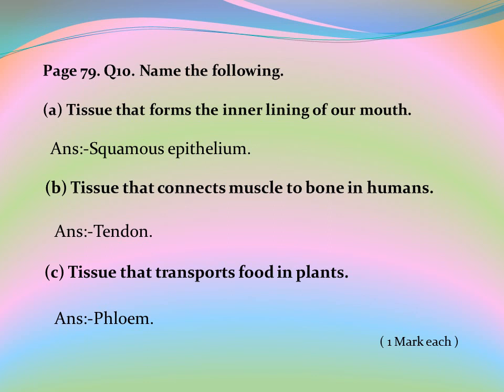Page 79, Question 10: Name the following. A. Tissue that forms the inner lining of our mouth — Answer: squamous epithelium. B. Tissue that connects muscle to bone in humans — Answer: tendon. C. Tissue that transports food in plants — Answer: phloem.